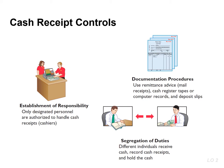Cash receipts result from the sale to customers, the receipt of interest, rents, and dividends, investments by owners, bank loans, and proceeds from the sale of non-current assets.